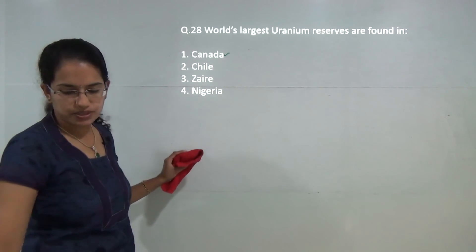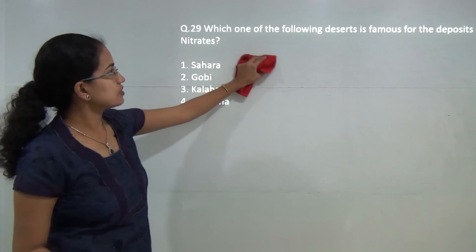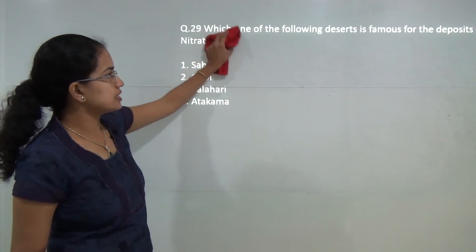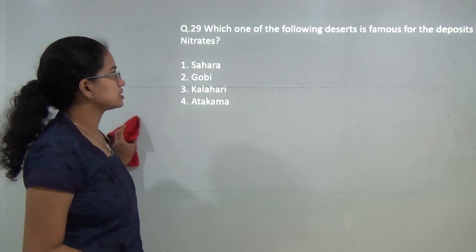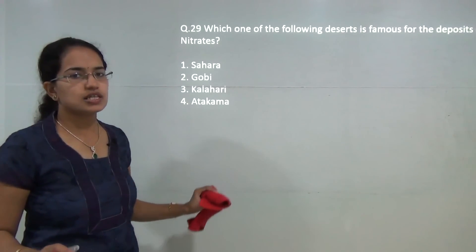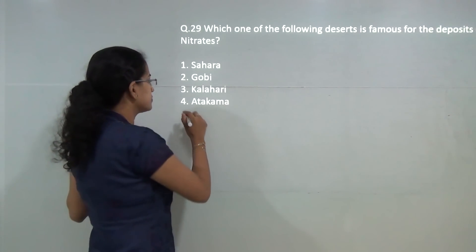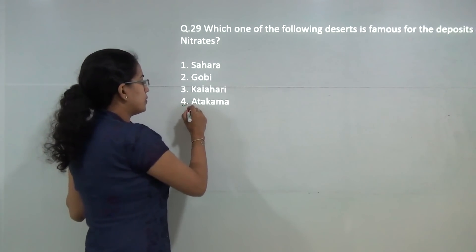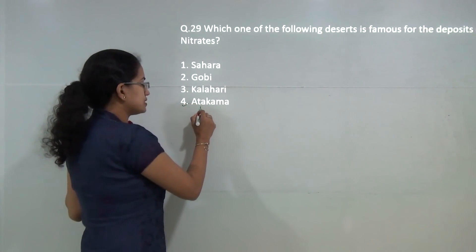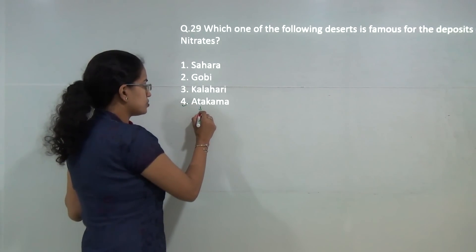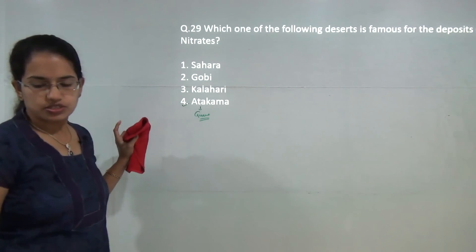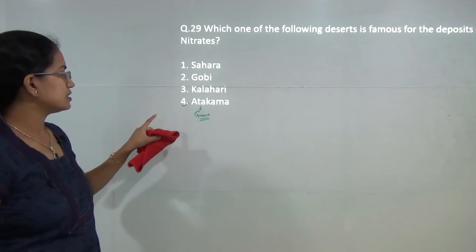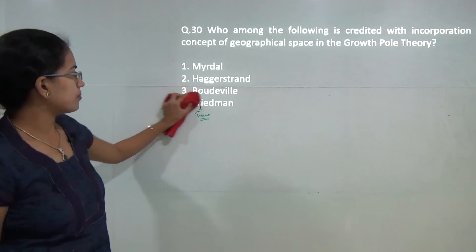Next question: which of the following deserts is known for nitrate deposits? Nitrate deposits are abundant in the Atacama desert. The Atacama desert in Chile is also known for the guano birds and the guano droppings which are nitrate rich. So the correct answer is Atacama.